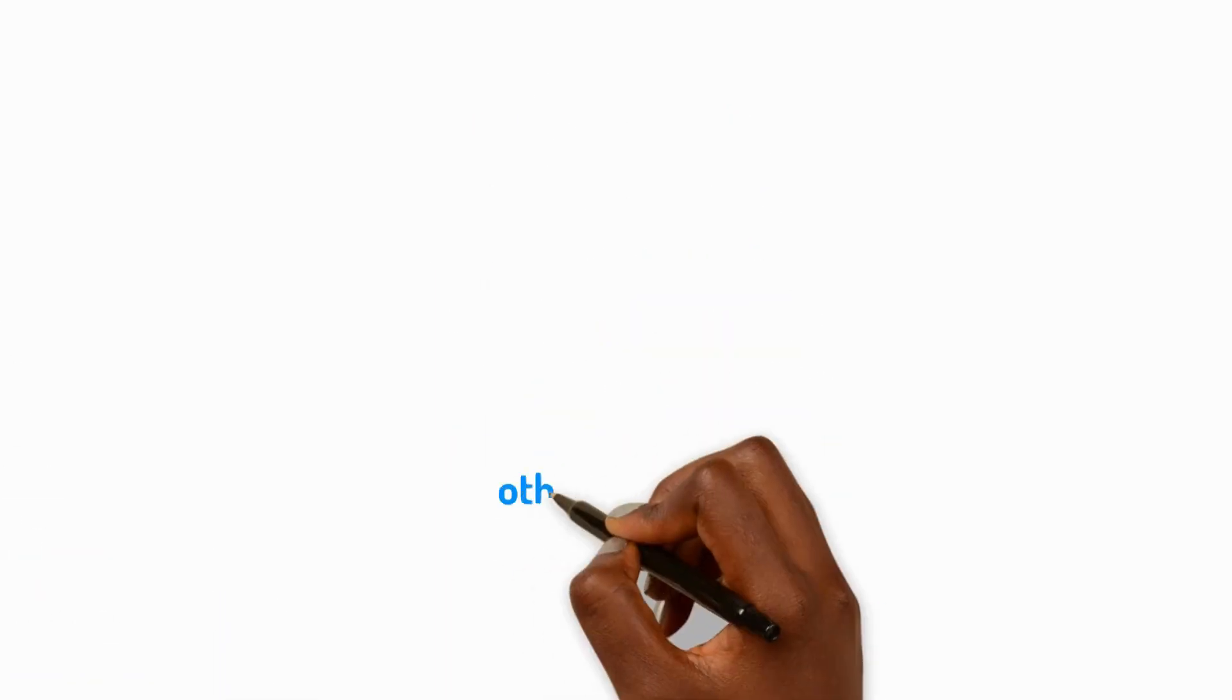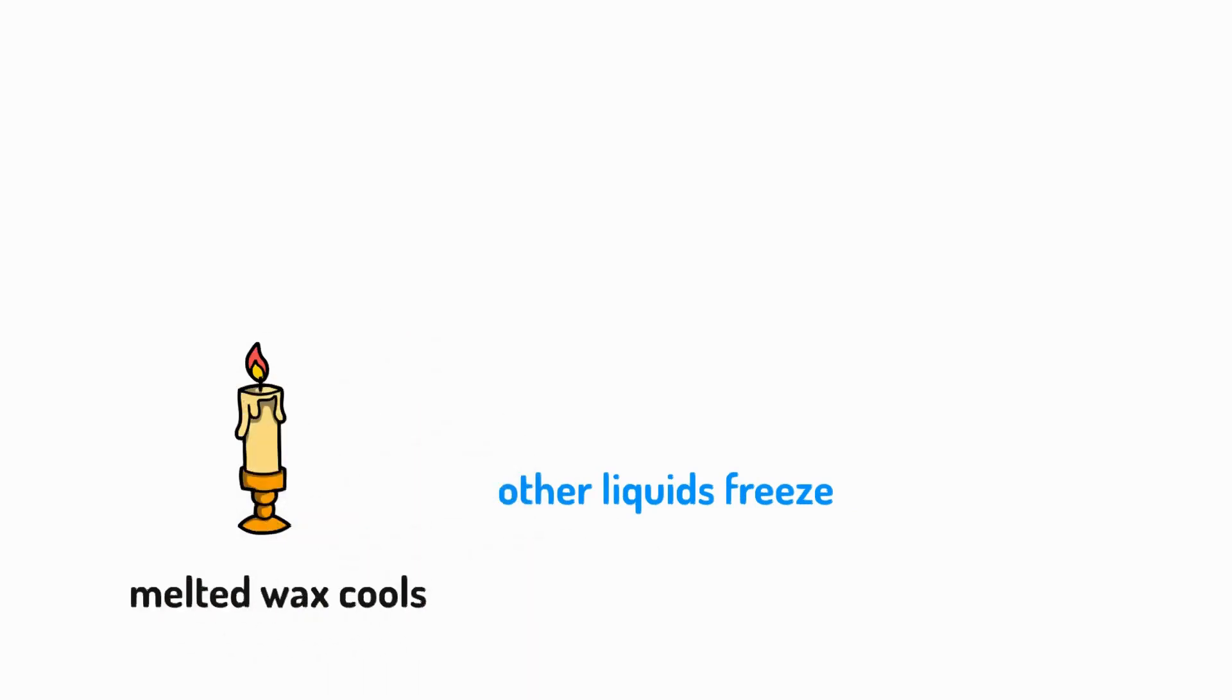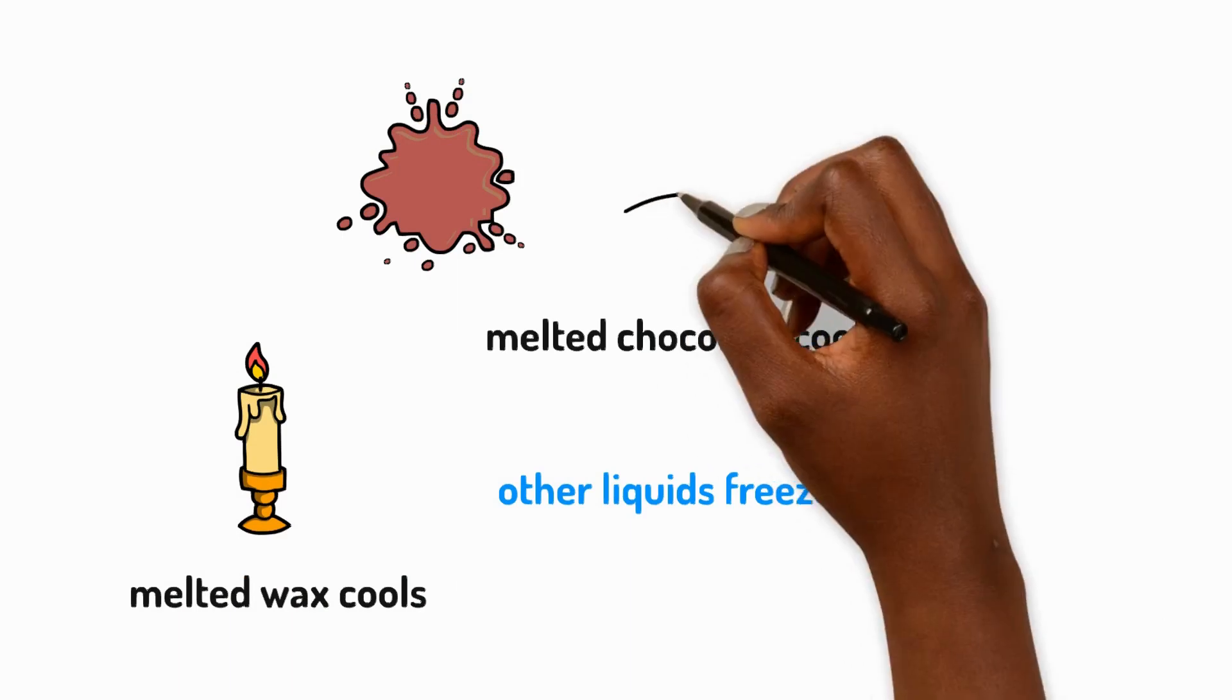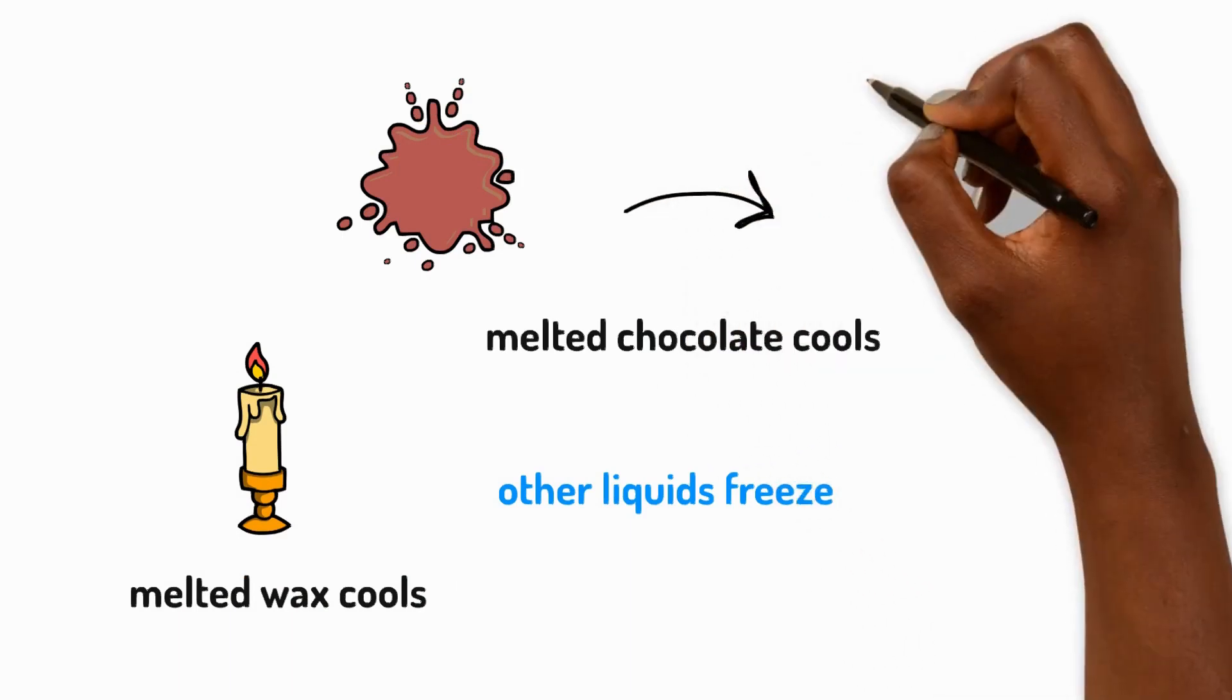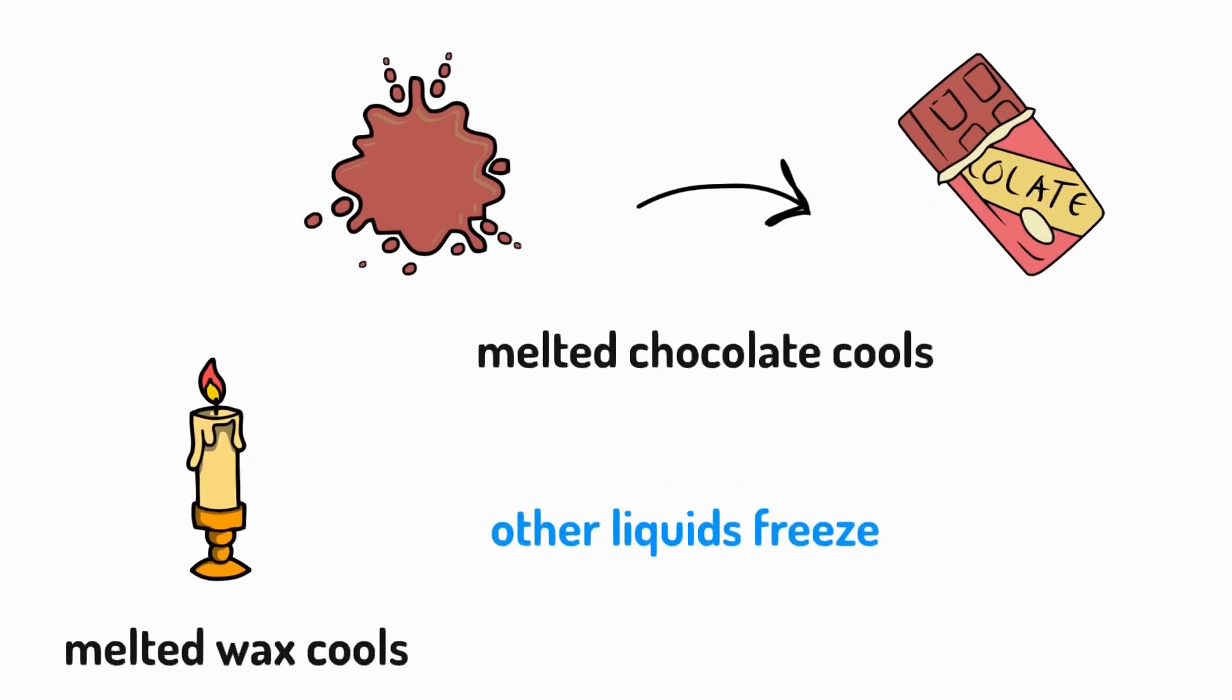Liquids other than water also freeze. When melted wax cools, it turns from a liquid to a solid. When melted chocolate cools, it too freezes from a liquid to a solid. These both happen at a higher temperature than water freezing and becoming ice, but they are still examples of freezing a liquid until it becomes a solid.